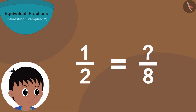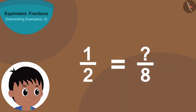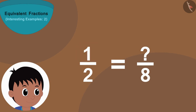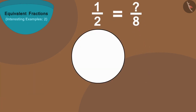Raju wrote this fraction. Here the number two shows how many parts of a thing are created, and the number one shows that we took one of those two parts. Like if we divide this circle into two equal parts.